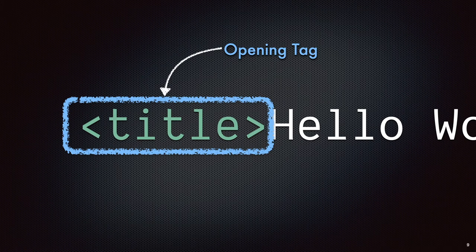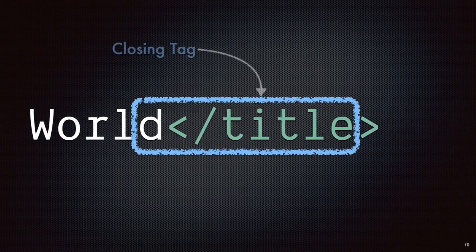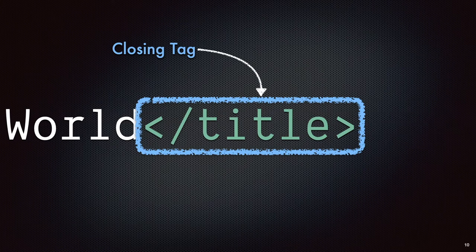The closing tag is pretty similar except right after the less-than symbol we're also going to have a slash. Then we're going to have the same word — the name of the tag, so "title" in this case — and then the greater-than symbol.